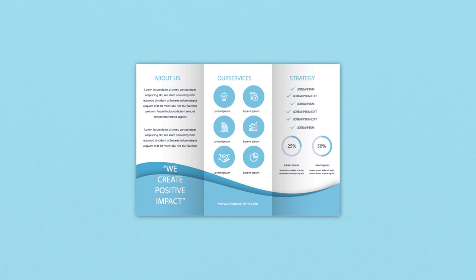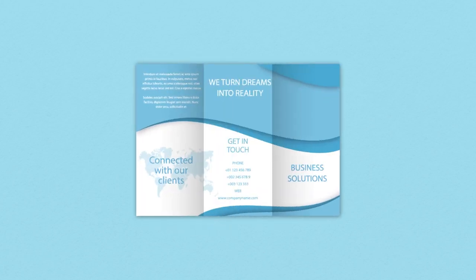A trifold brochure is an economical way to print, as it usually conforms to a standard A4 or letter size. Oddly, its name is misleading, as it contains two folds. The result is a three-panel design printed on both sides, providing a total of six pages.